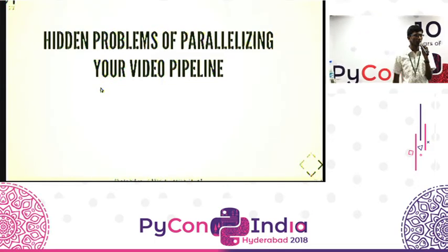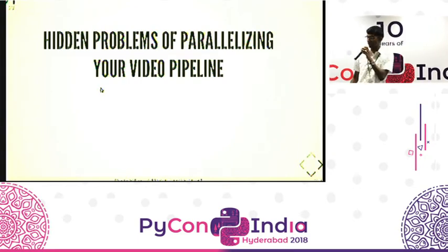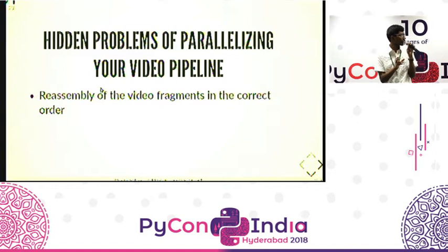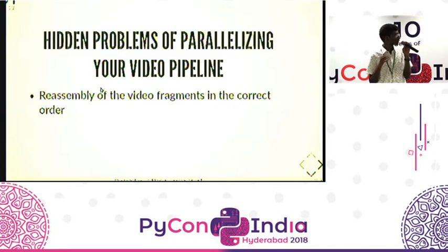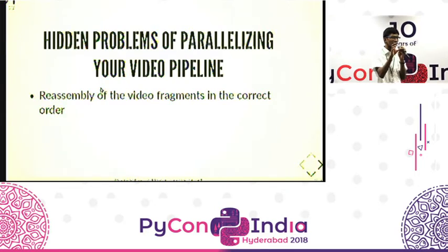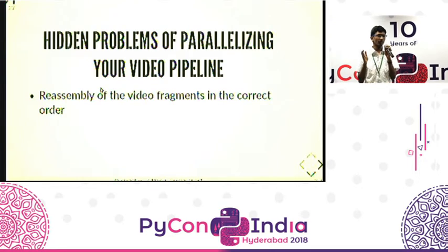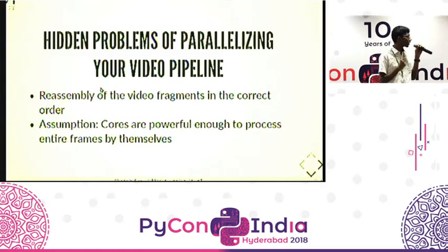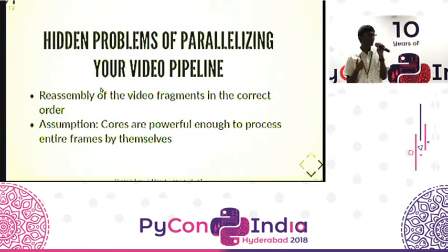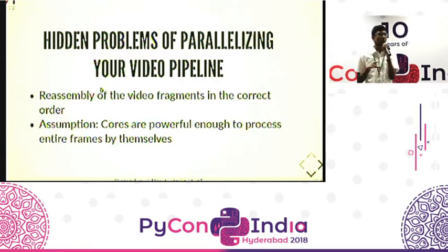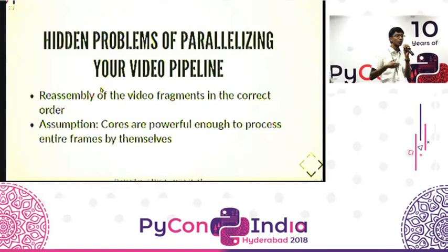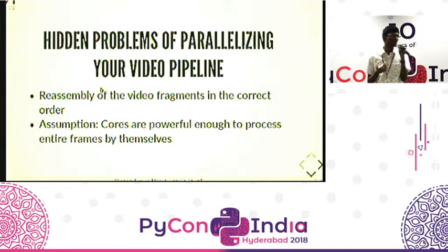Before coding with GPUs, let's see the hidden problems in this pipeline. We split the video into four parts; after processing, we need to arrange them back in the same order. If the third core finishes first, that part of the video comes out first and order gets jumbled — you need a mechanism to reorder correctly. Also, the assumption is each core is powerful enough to process a single frame. For GPU, you have thousands of cores, but each GPU core is much less powerful than a CPU core. The benefit of GPU is that there are so many of them — you get power from unity.